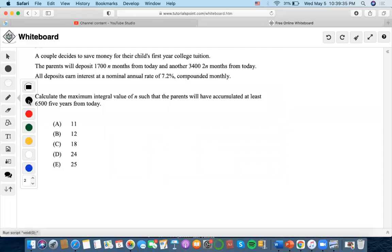For this problem, a couple deposits money: $1,700 N months from today and $3,400 2N months from today. At this rate, calculate the maximum such that we'll have accumulated $6,500 five years from today.